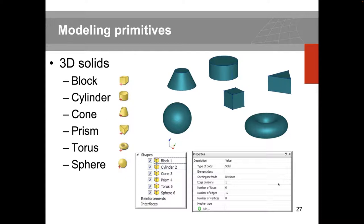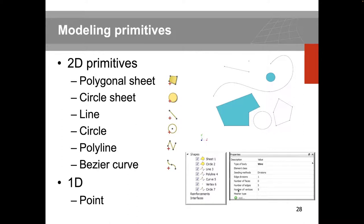For basic 3D modeling primitives, you can define a block, cylinder, cone, prism, torus, or sphere. In the property window, you can access detailed information about the geometry entity and its sub-entities in terms of faces, edges, and vertices. For 2D, we have polygonal sheet, cycle sheet, line, circle, polyline, and basic curve. For 1D, we have points — and the same property window access applies.